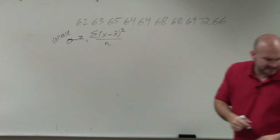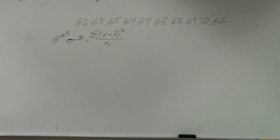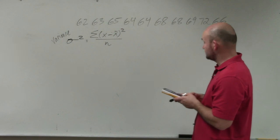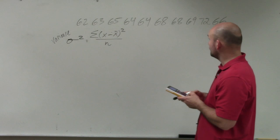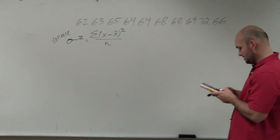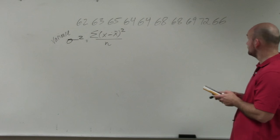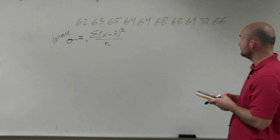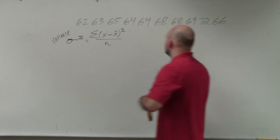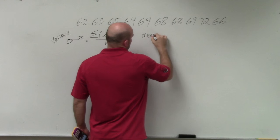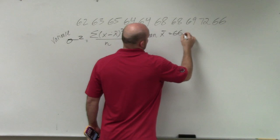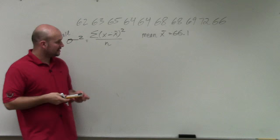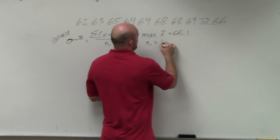Now, they already said 66.1 was the mean. I just want to make sure, let's just double check that. Make sure that that is plus 64, plus 64, plus 68, plus 68, plus 69, plus 72, plus 66. Divided by how many terms do we have? 10? 66.1. So the mean, and they actually gave it to the other problem, but I wanted to check it out. The number of values n is equal to 10.